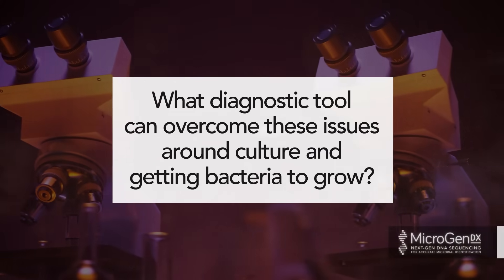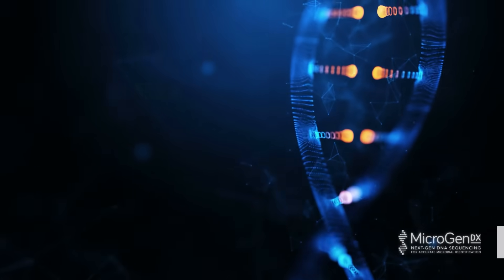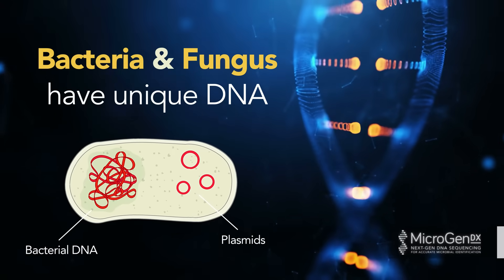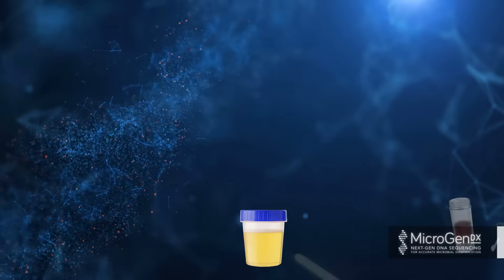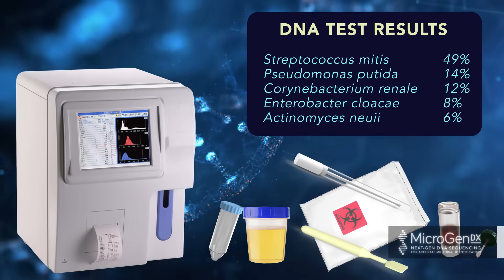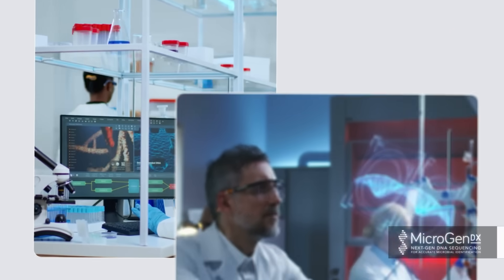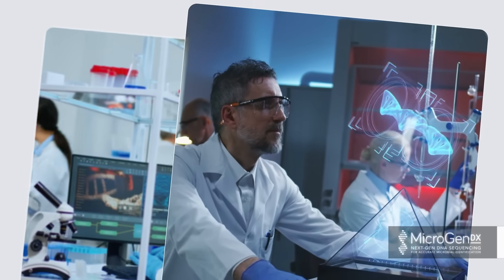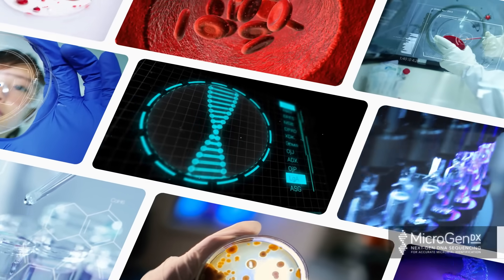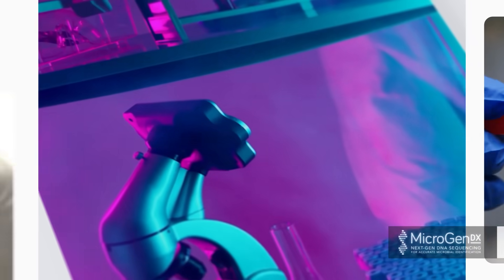What diagnostic tool can overcome these issues around culture and getting bacteria to grow? Just like each of us has our own unique DNA, bacteria and fungus also have their own unique DNA. We can now take a sample from the host — urine, blood, tissue, fluid, swabs — and within that sample we collect the microbes living at that site of the infection. Rather than trying to grow them in a petri dish, we can extract their DNA. Like a crime scene, we collect the DNA and then compare it to a known library or database of the exact DNA sequence code. A match of the bacterial DNA from the sample to the database tells us what type of bacteria is in the sample.